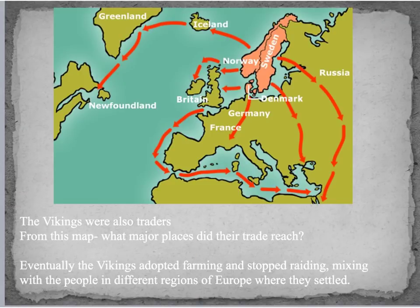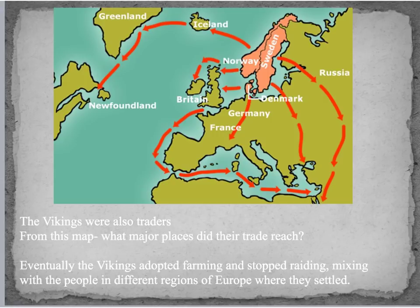The Vikings are often portrayed as very warlike, and they did do that, but they were also traders. If you look at the map, it's interesting to see what major places they reached — yes, Western Europe, but also eastwards towards Russia, and then Iceland, Greenland, and even Newfoundland, which is today part of Canada. So they crossed all the way across the Atlantic Ocean. Eventually, in the later part of the Middle Ages, the Vikings adopted farming and stopped raiding, and they assimilated into Western Europe and became settled farmers.